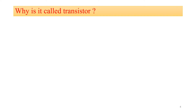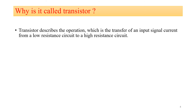Now let us see why this semiconductor device is called a transistor. The transistor describes the operation which is the transfer of input signal current from a low resistance circuit to a high resistance circuit — it transmits the input signal current from the low resistance circuit to the high resistance circuit. Transistor is derived from two words: transfer plus resistor. That is why it is called a transistor.